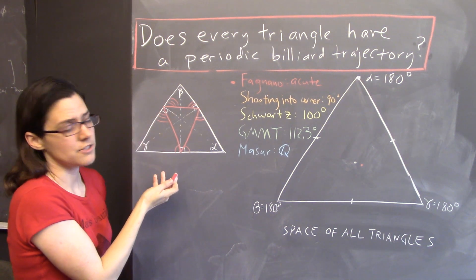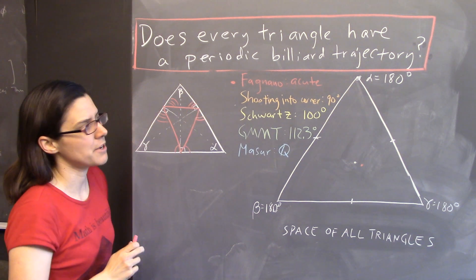Now, this works for all acute triangles, but you might wonder, does every triangle have a periodic billiard trajectory?